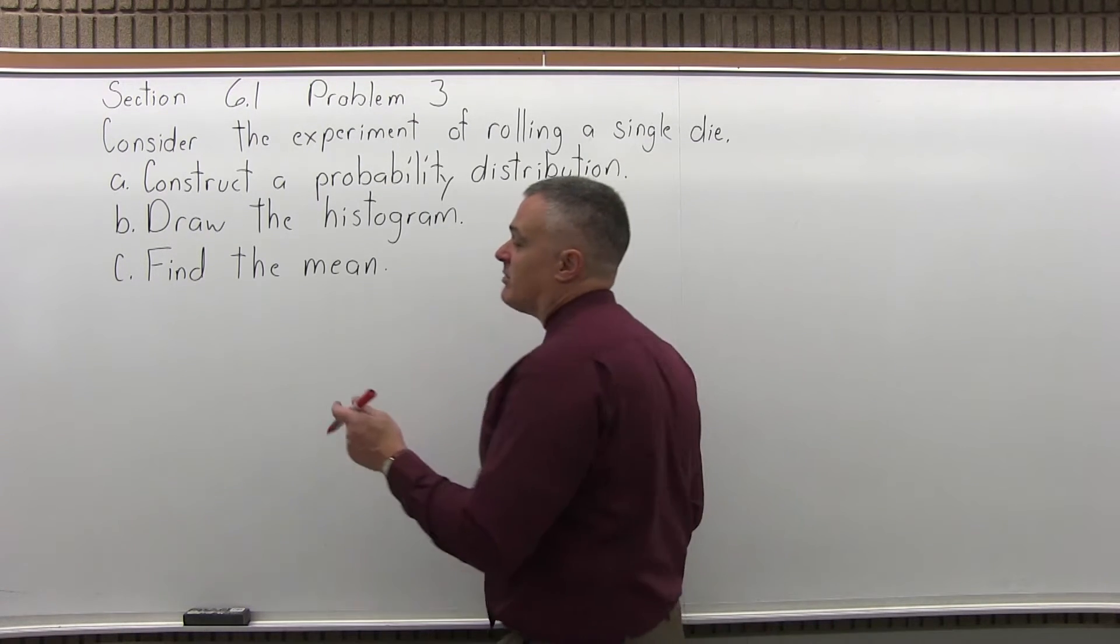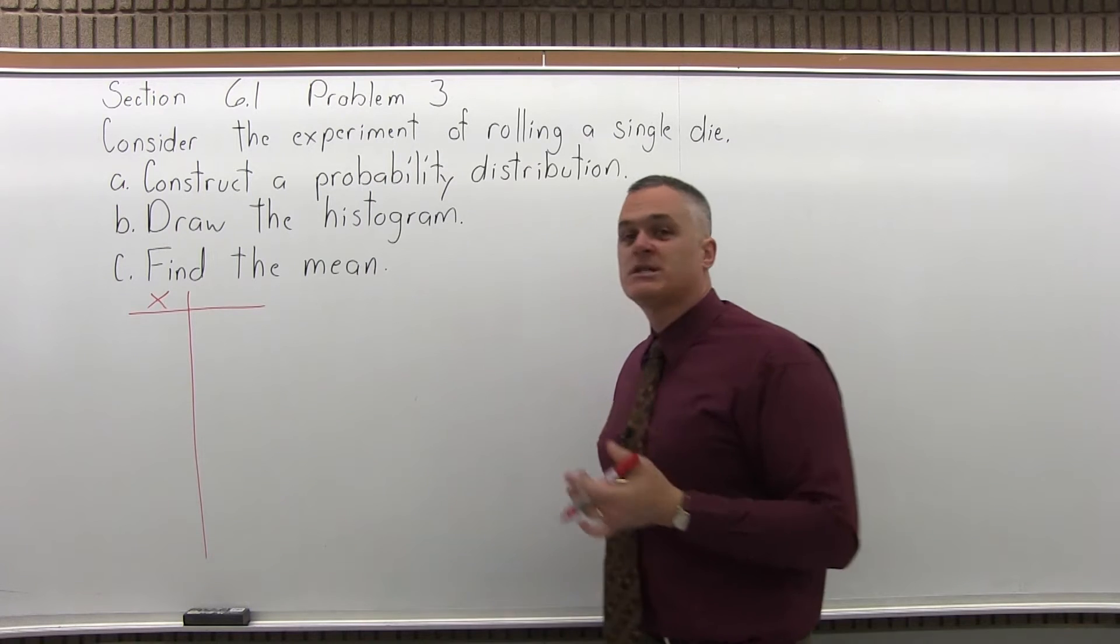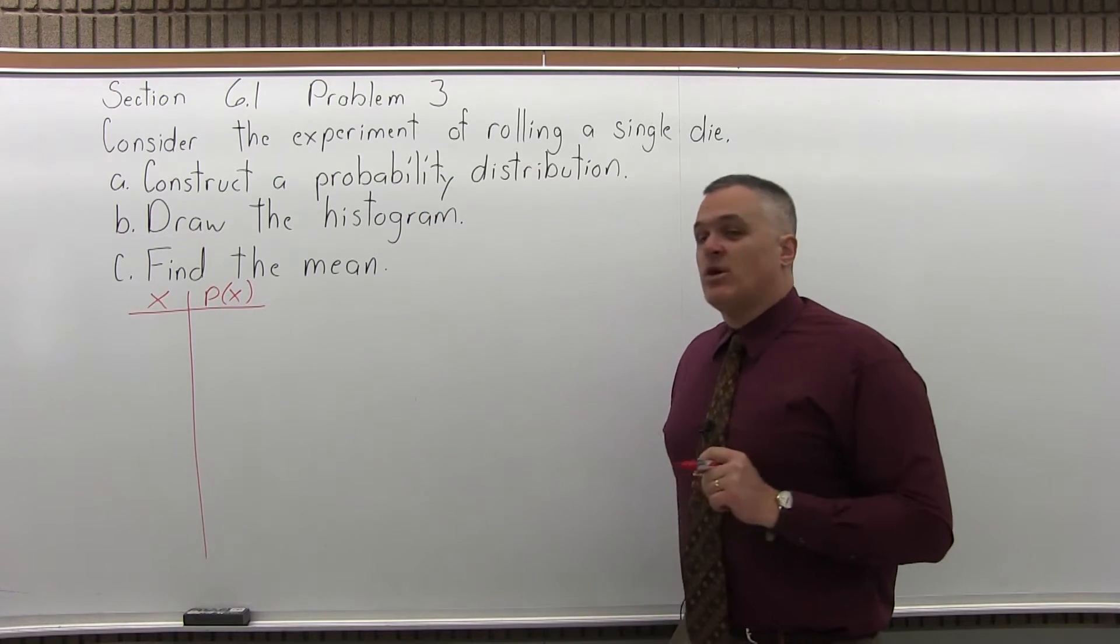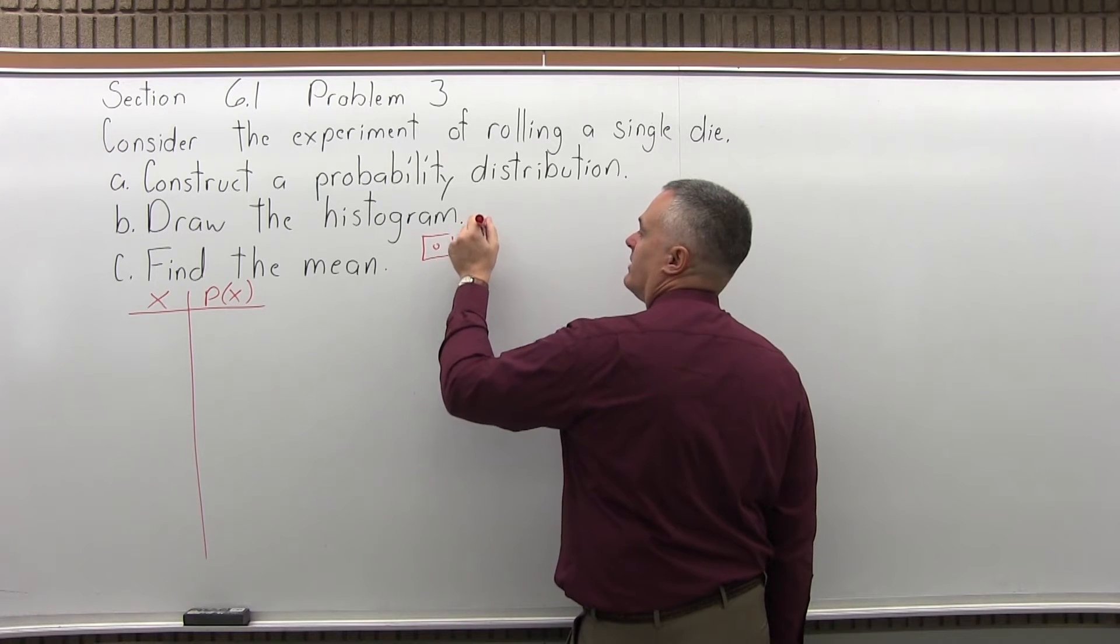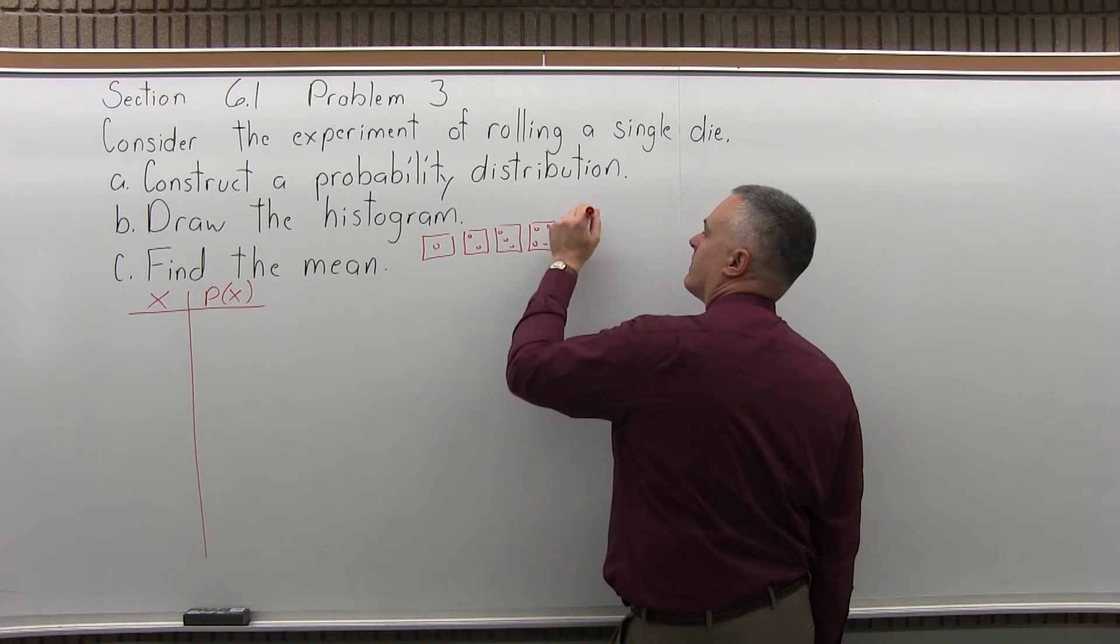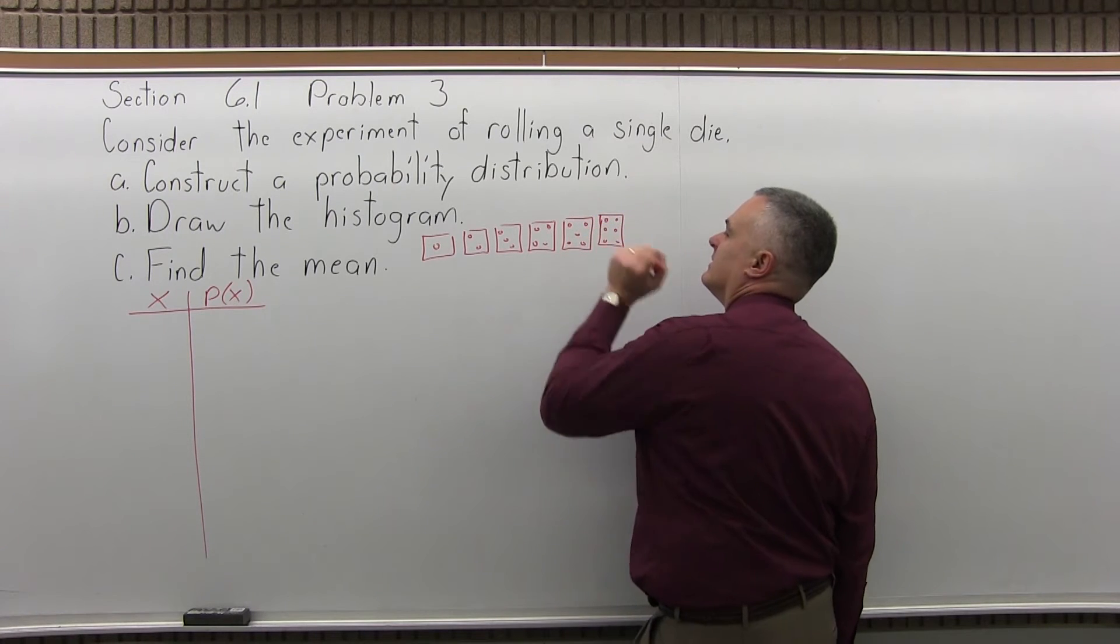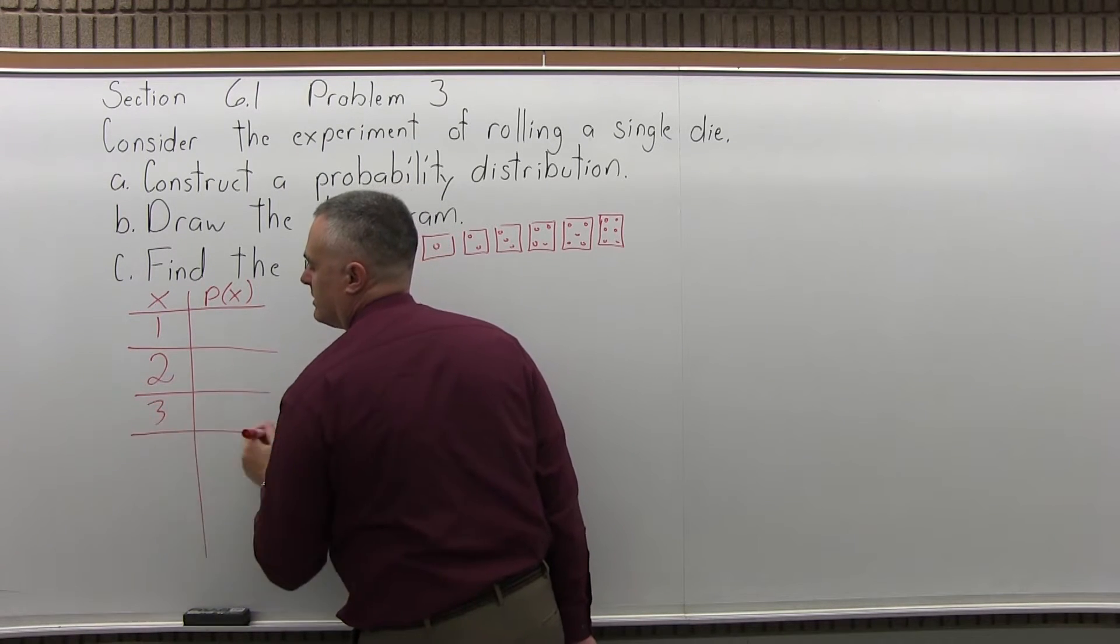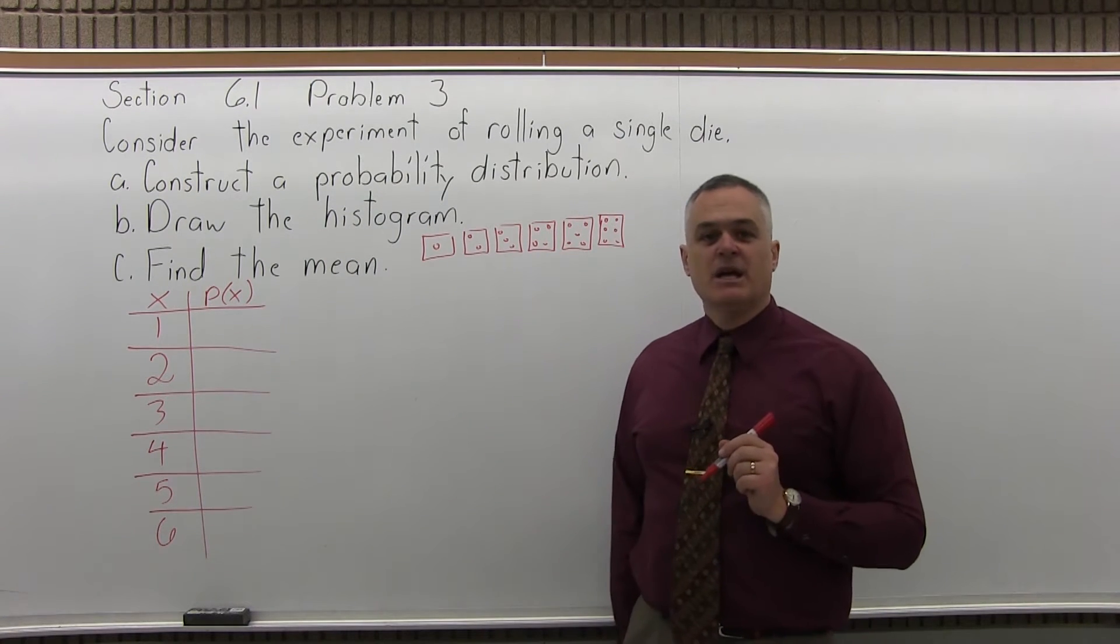So, for the probability distribution, a probability distribution is a chart with two columns. The first column we label X and it lists every possible outcome for your experiment. And the second column we label P(X) for probability of X. So for this experiment of rolling a single die, what's every single outcome you can have? It's 1 through 6. For the first column of my probability distribution, I'll put in 1, 2, 3, 4, 5, 6. That's every outcome I can get.